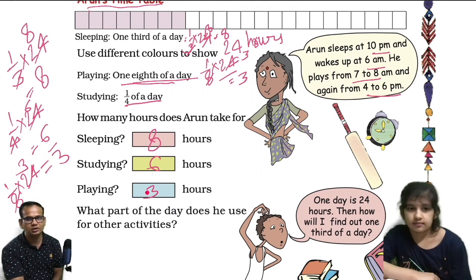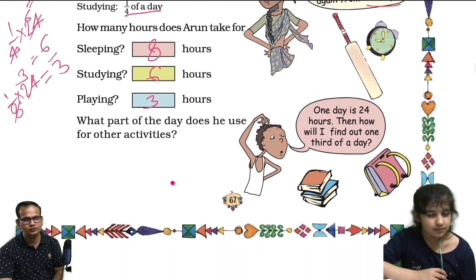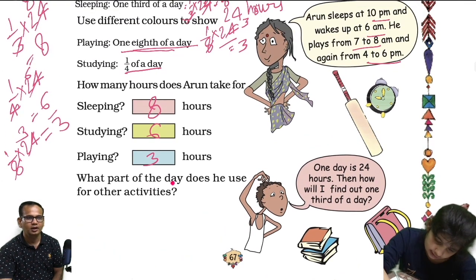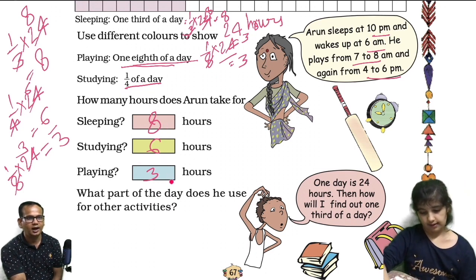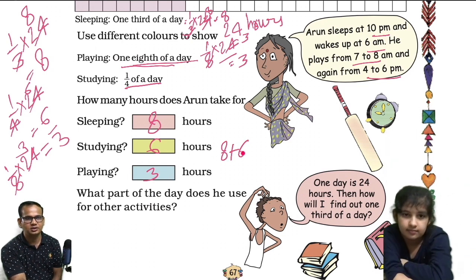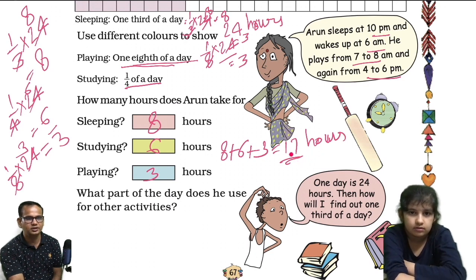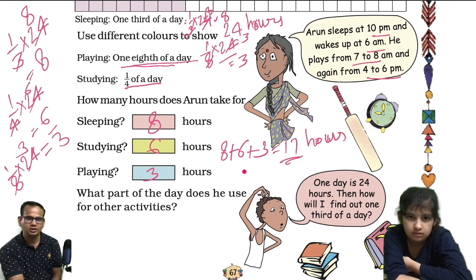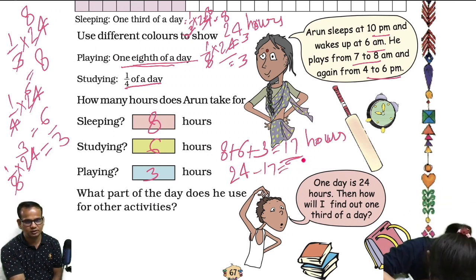Now, what part of the day does Arun use for other activities? Other activities means if we add sleeping, studying, and playing together: 8 plus 6 plus 3 equals 17 hours. So he uses 17 hours total. That means for other activities, the remaining hours are 24 minus 17, which equals 7 hours. Correct, Avisha — 7 hours.